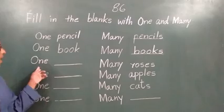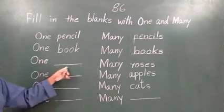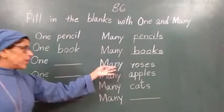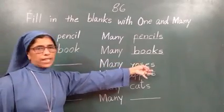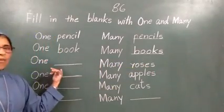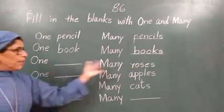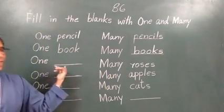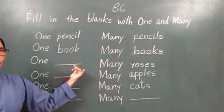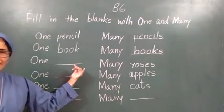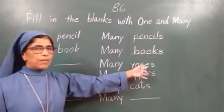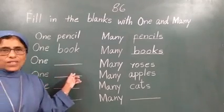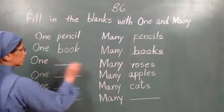Ab dekho — one, dash. Kaisi se likhenge, idhar kya hai? Kaisi se pata chalega? Many roses hai. Toh idhar kya ayengi? One. Many roses. Toh idhar? One ke baad kya likhna hai? Rose likhna hai — ek hai na? Rose likhna hai. One hai to rose. One rose, many roses.